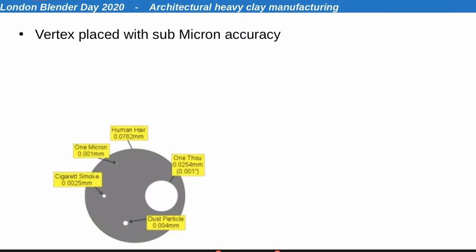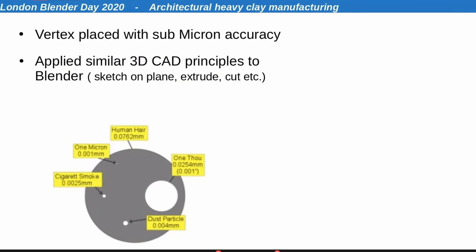A typical CNC machine at the time was working to plus or minus three microns; Blender could go to a fraction of that. Today's plastic filament extruder printers are extruding to plus or minus 0.2mm (200 microns), so the models can be far more accurate than you can actually produce them as a physical product. The principle of sketching on a plane and extruding became reasonably easy for me, coming from a CAD background and understanding Cartesian coordinates. The accurate visualizations were starting to win jobs with engineers.